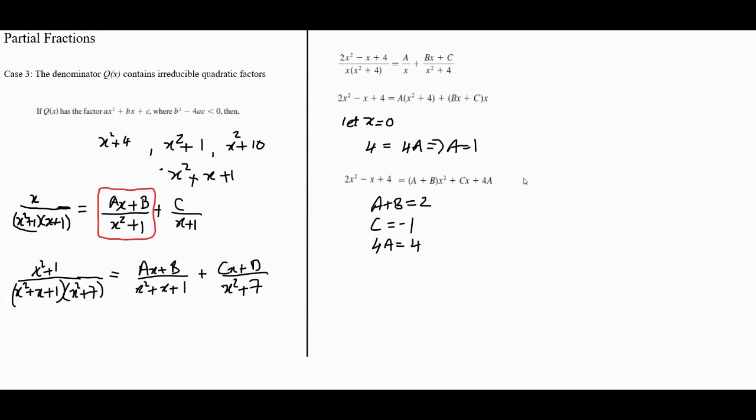The coefficient of x² is A + B here and 2 on the other side. Similarly, C is the coefficient of x here and -1 on the other side.